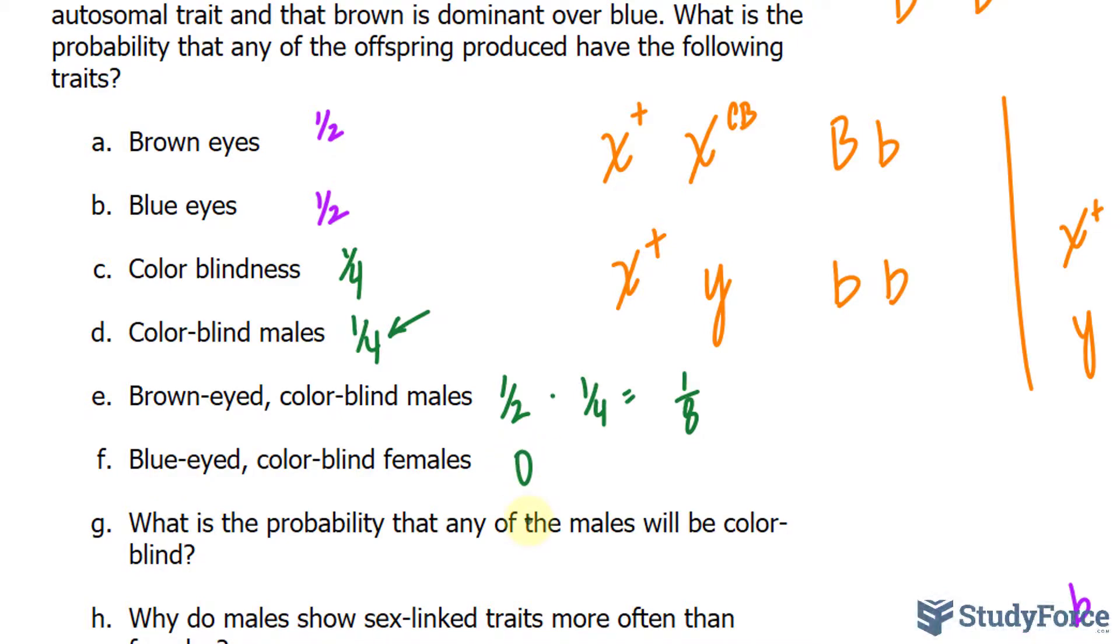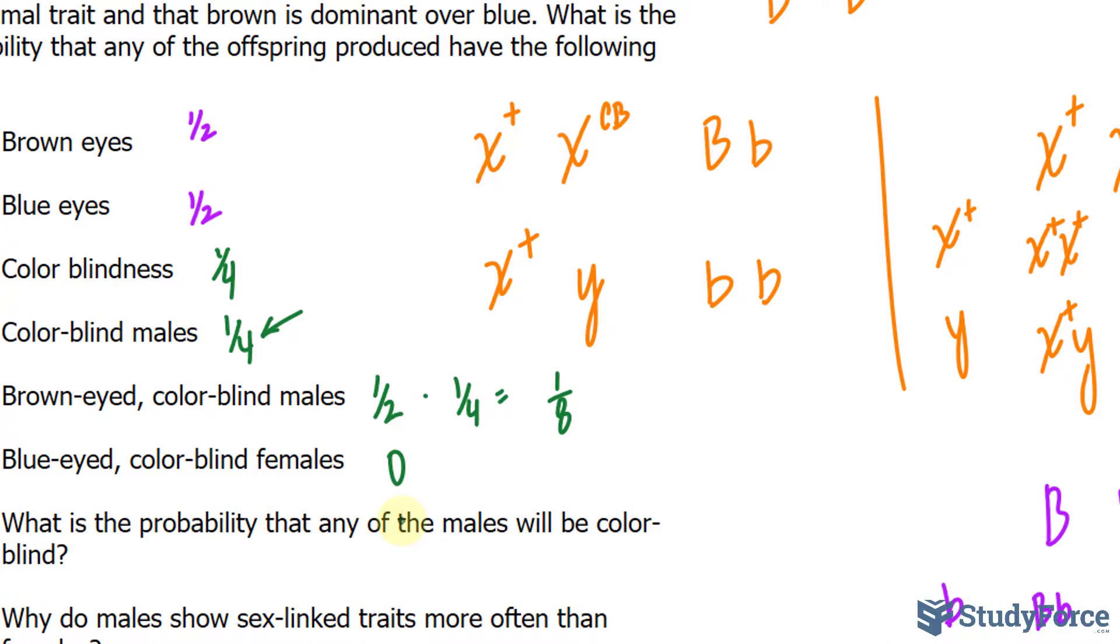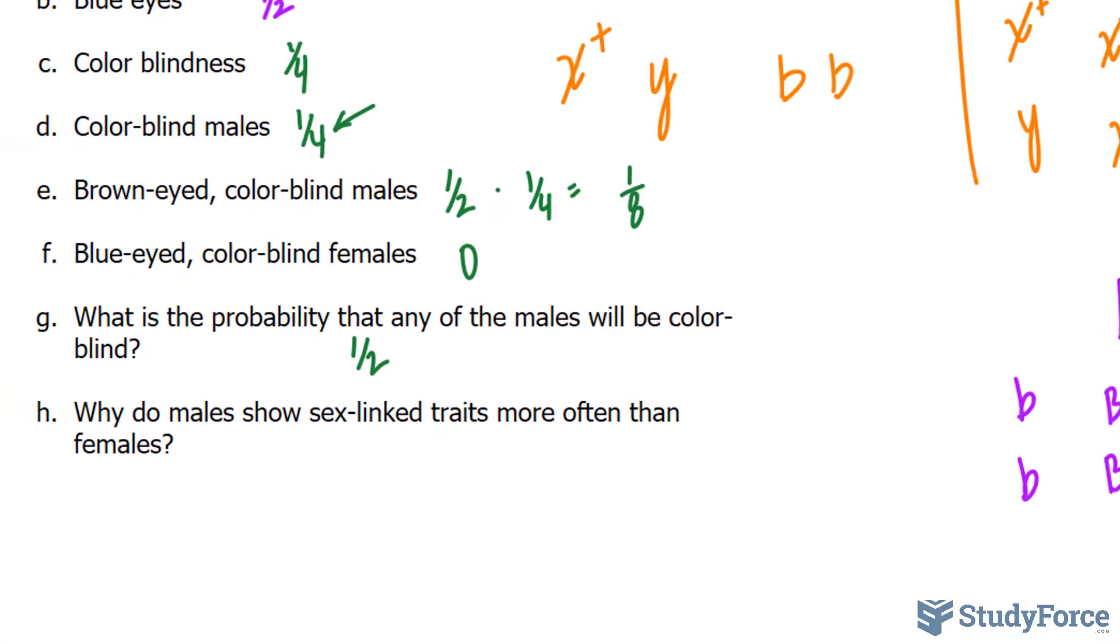What is the probability that any of the males will be colorblind? There are two males, and one of their genotypes is colorblindness. So there's a half chance that the males will be colorblind.